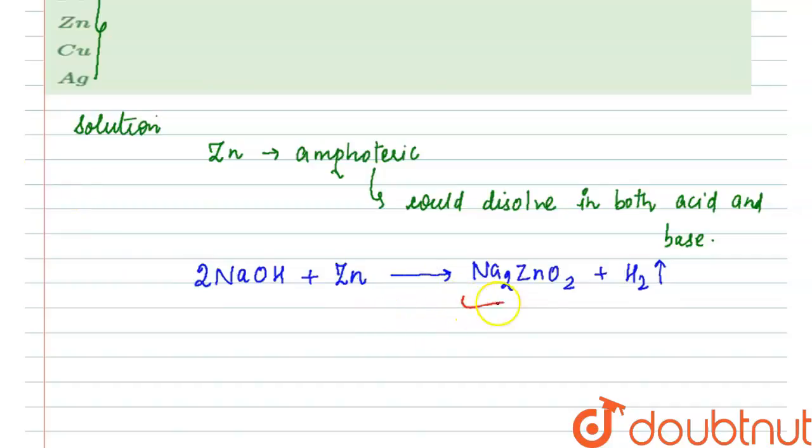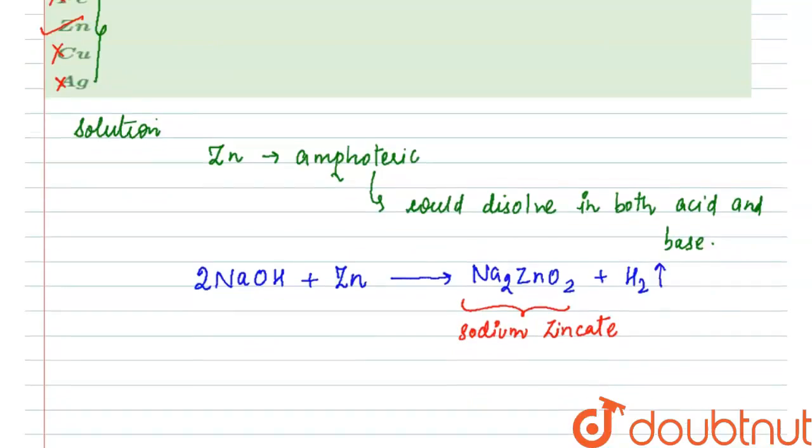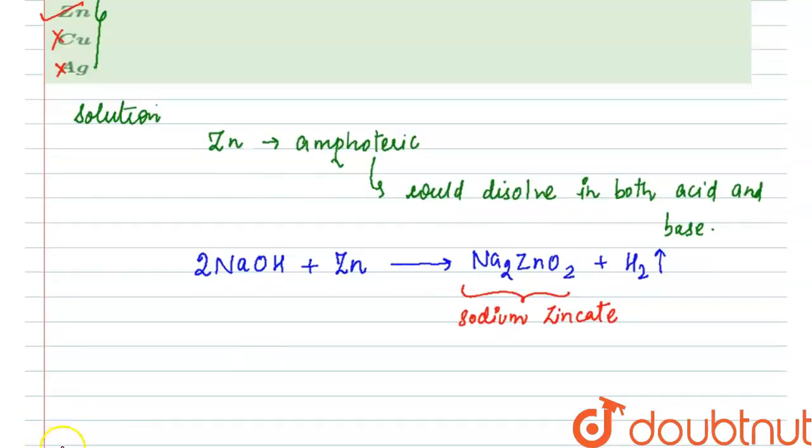Now the compound that is formed here is a complex and this is known as sodium zincate. So the correct option for this particular question will be zinc and rest all the others will be incorrect. I hope you all understand. Thank you.